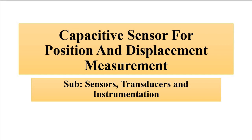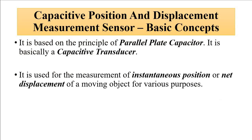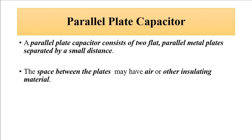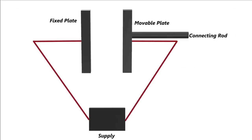The basic operating principle of any capacitive sensor used for measurement of any physical parameter is based on the principle of a parallel plate capacitor. It consists of two parallel metal plates for sensor purposes. One of them is fixed, and the other one is movable. It is connected to a rod which is connected to the object whose displacement or physical parameter is to be measured.